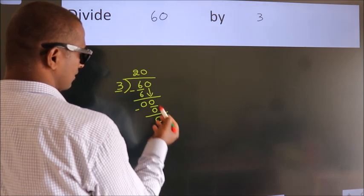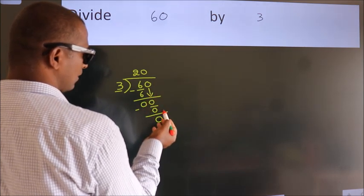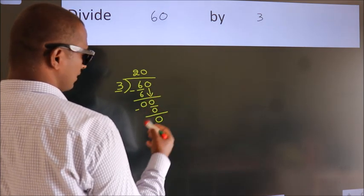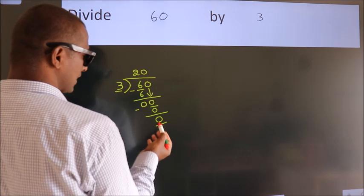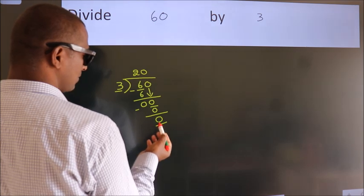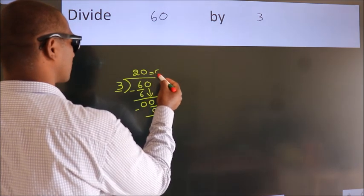After this, no more numbers to bring down, and we got remainder 0. So this is our quotient.